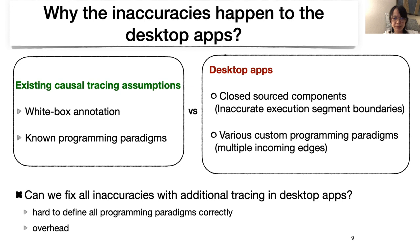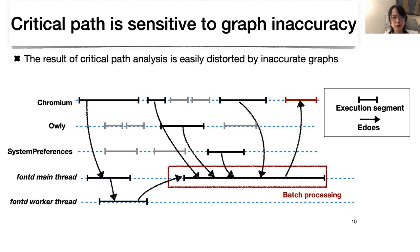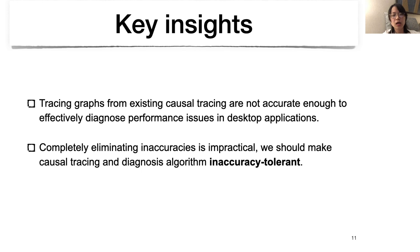The choice of diagnosing algorithm also matters for causal tracing's effectiveness. We applied the typical critical path analysis to the Chromium case. The analysis blames the large execution segment in FontD, but FontD is not the root cause. The result of critical path analysis is distorted due to batch processing. The real root cause is a livelock bug inside Chromium. Our key insight is that while causal tracing is promising, applying it directly introduces inherent inaccuracies, and eliminating them completely is not practical. The causal tracing graph and the diagnosis algorithm need to tolerate inaccuracies.